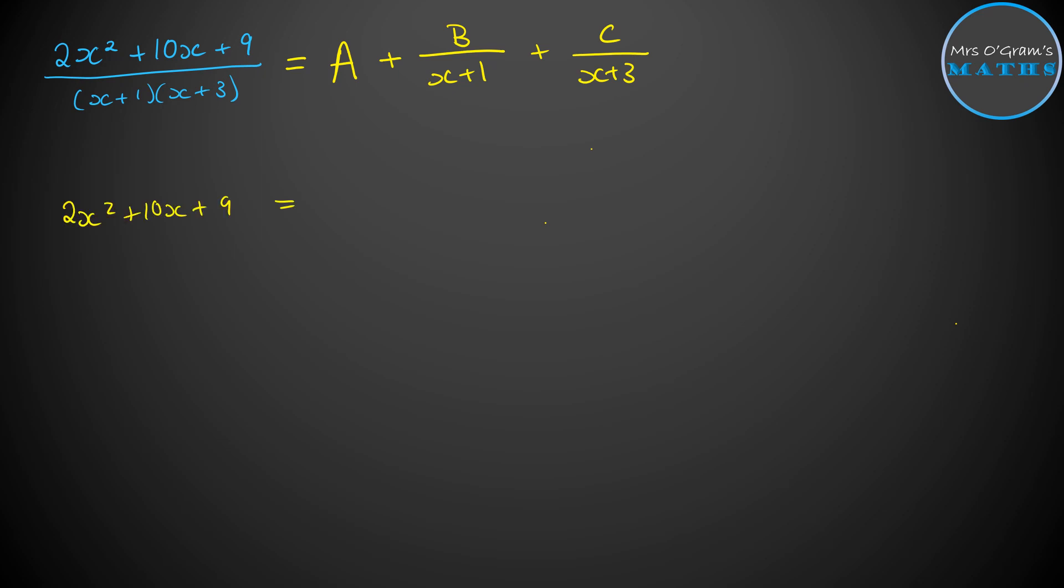And then you carry on in much the same way as you've done on all of the other ones. So write it out as what would happen if we needed to put that all back over a common denominator, and then the top of that fraction, what would it look like? So A would need to be multiplied by X plus 1, X plus 3. B would need to be multiplied by X plus 3, and C would need to be multiplied by X plus 1.